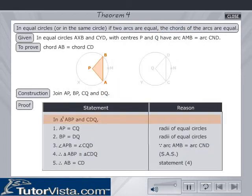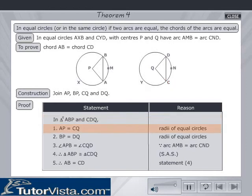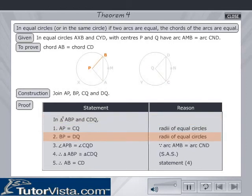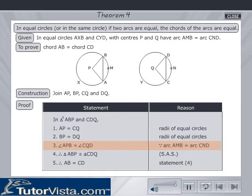Proof: In triangles ABP and CDQ, AP equals CQ and BP equals DQ, since they are radii of equal circles. Angle APB equals angle CQD, since arc AMB equals arc CND.